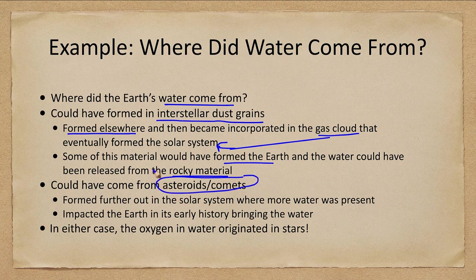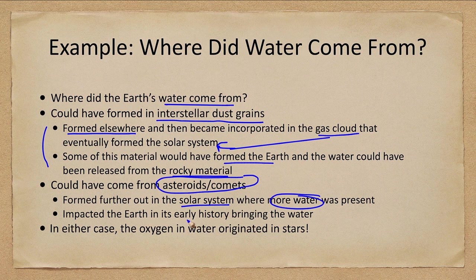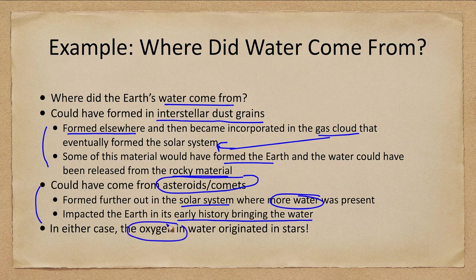Or water could have come from asteroids or comets, which would have also formed from interstellar dust grains. Did it come directly to Earth, or through comets that formed further out in the solar system where there was more water, and which impacted Earth in its early history? In either case, the oxygen in water came from the stars — oxygen was not formed in the big bang.